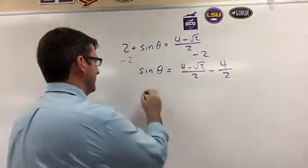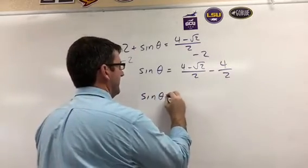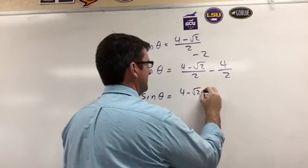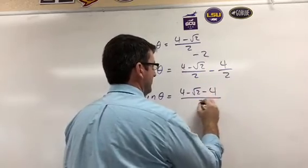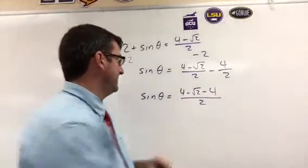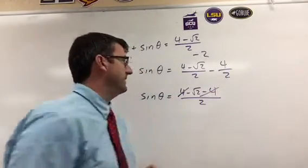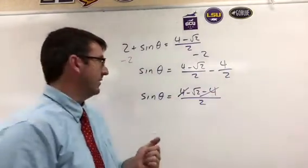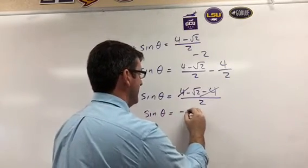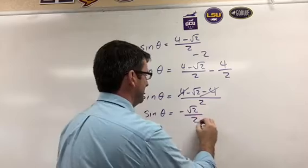So now we have a common denominator and we can subtract those. So we have 4 minus square root of 2 minus 4 divided by 2. And then notice that 4 minus 4 is going to subtract to 0. And so we're left with sine of theta equals negative square root of 2 over 2.